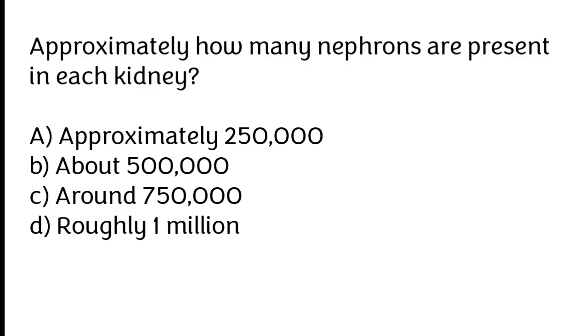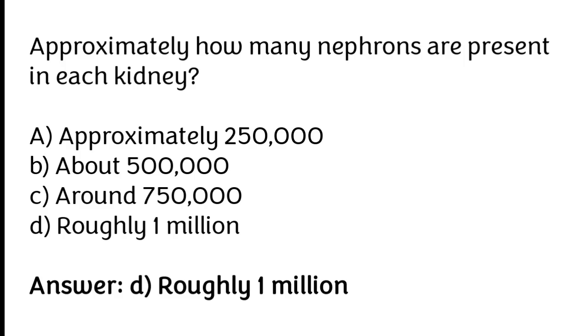The correct answer is option D. There are roughly 1,000,000 nephrons present in each kidney.